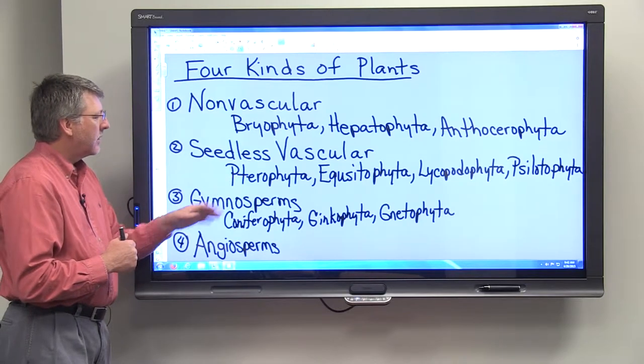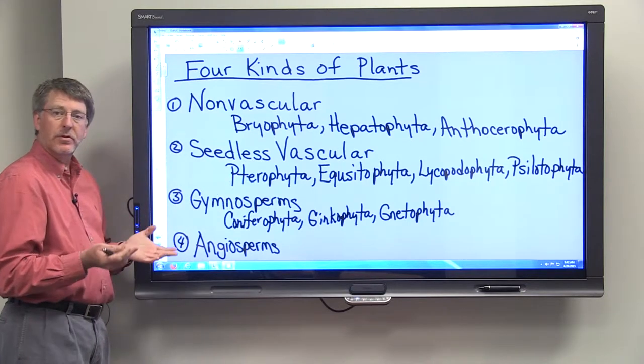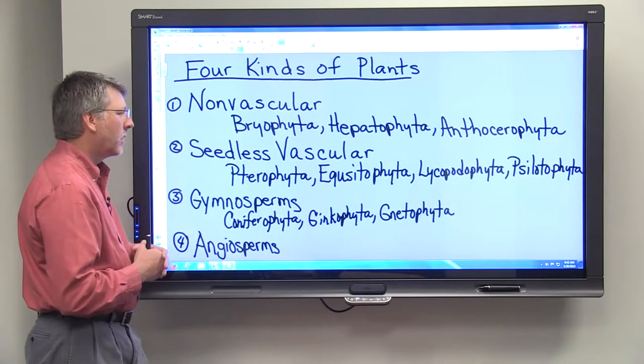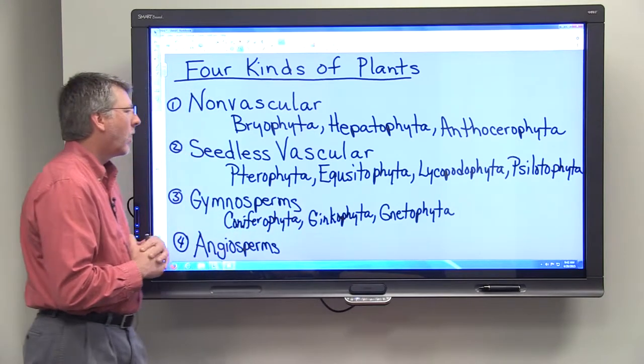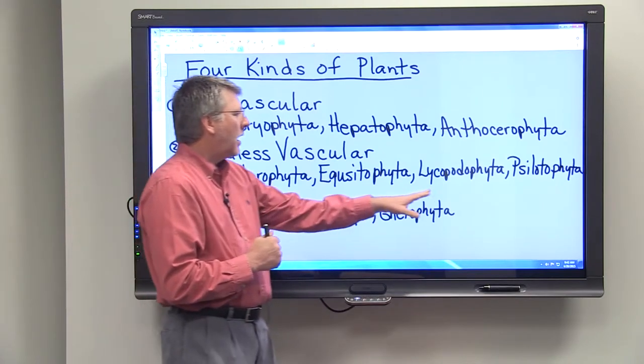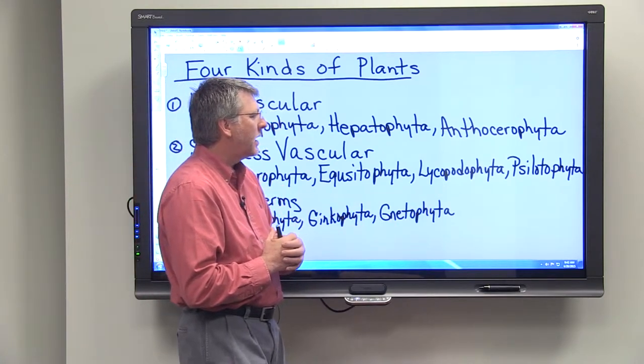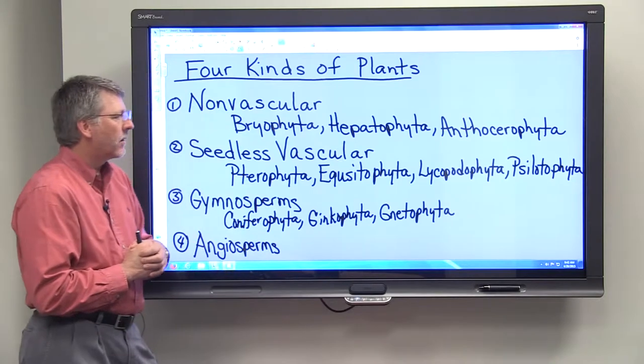Seedless vascular plants include pterophyta, which are just your ferns. You may have a fern growing in a pot in your house. Equisetophyta, which are horsetails; lycopodiophyta are club mosses; and psilotophyta are whisk ferns.